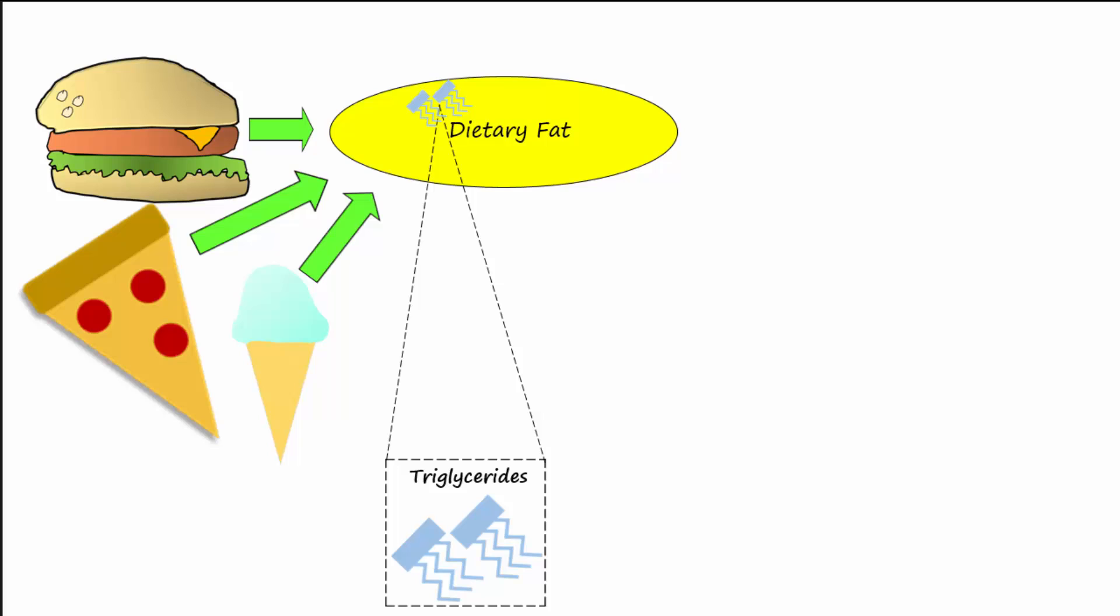There is a lot of fat in this burger and other fatty foods, and most of this fat comes in the form of triglycerides. Each triglyceride is made up of one glycerol molecule and three fatty acid tails.